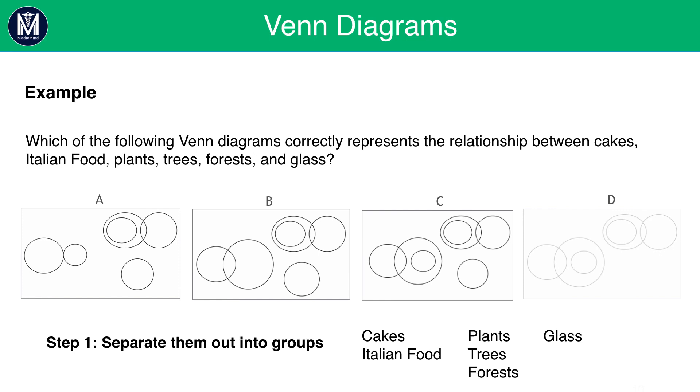Next, we can count the number of Venn circles there are. We know that there are six items. So we need to make sure that there are six items in each Venn. Unfortunately, C does not have six items. It has seven. Therefore, we can rule out C.